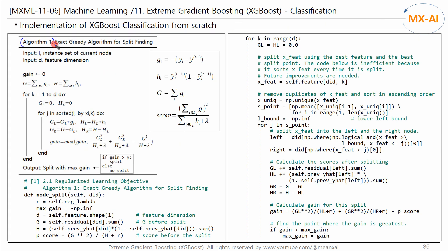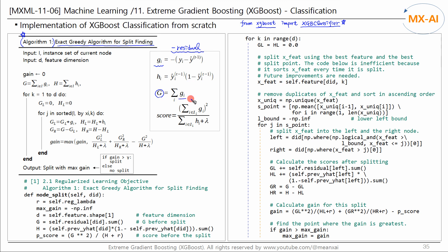Now let's implement Algorithm 1, the exact greedy algorithm for split-finding, presented in the paper from the previous video. This algorithm can be easily implemented using the XGBoost library, but to understand more about how it works, let's implement it from scratch and compare the results with the XGBoost library. G is a negative residual. The uppercase G is the sum of the negative residuals within a node. In classification, H is calculated using a specific formula. The similarity score is also calculated using a formula, where lambda is a regularization constant.